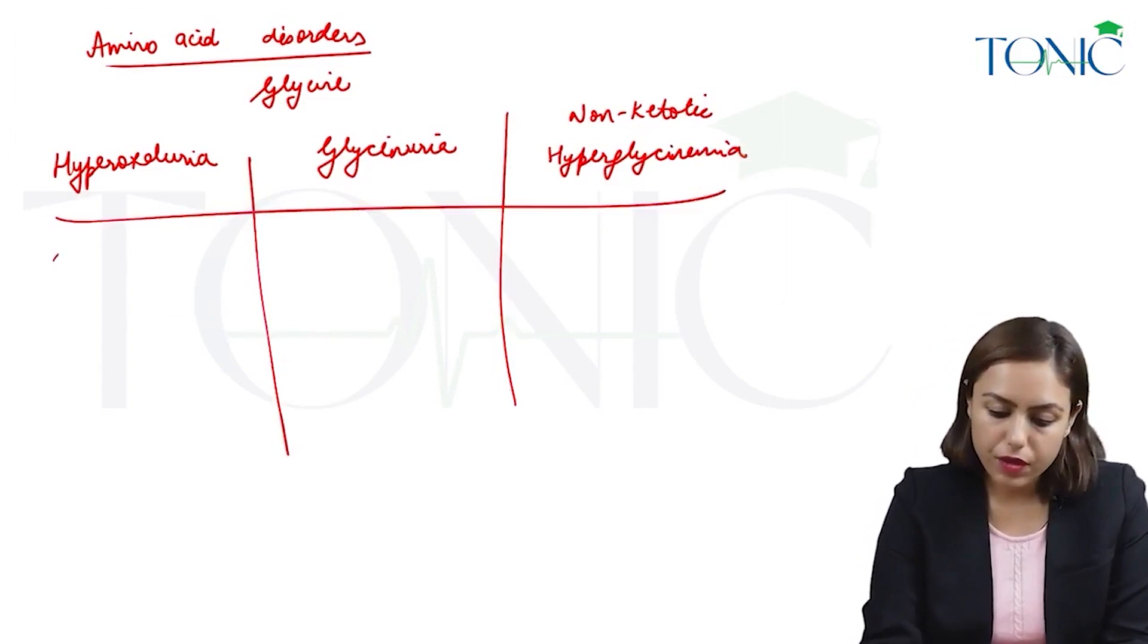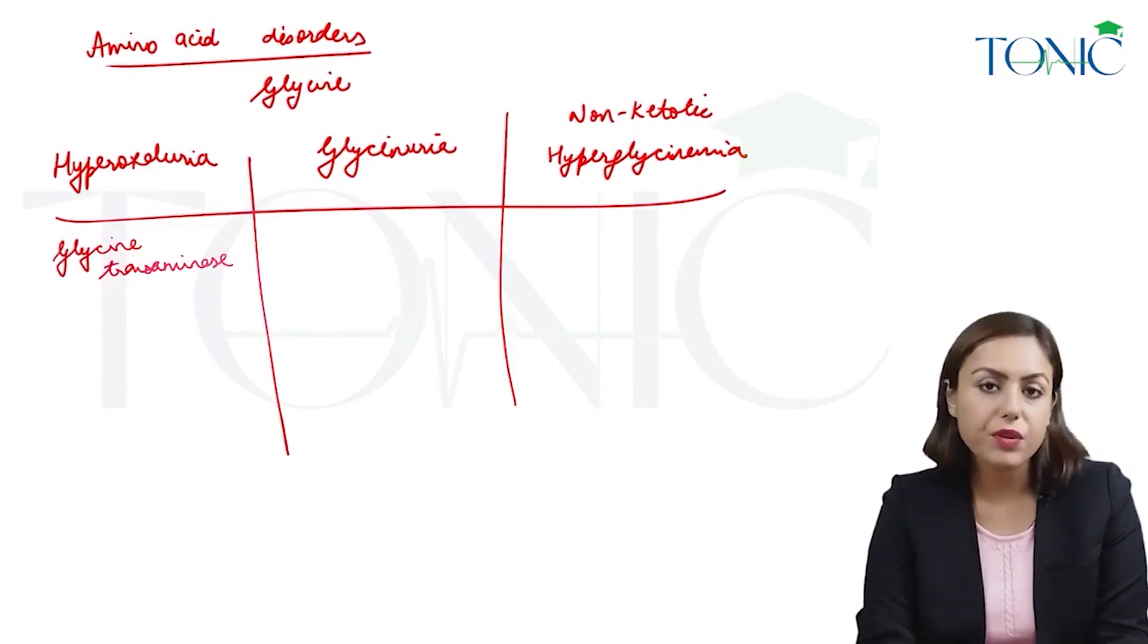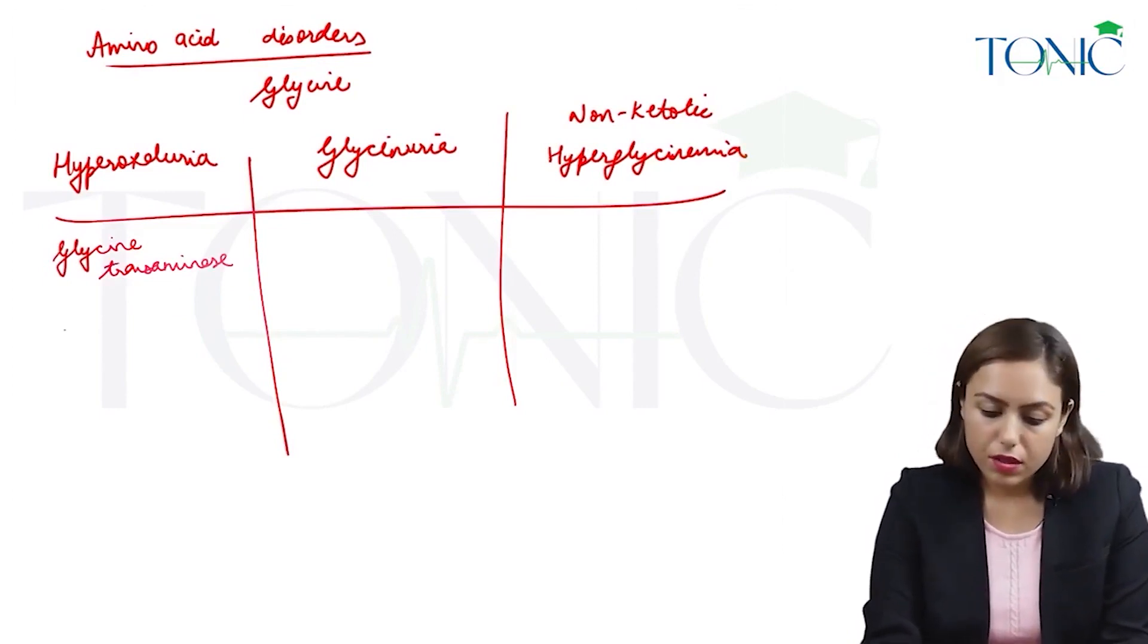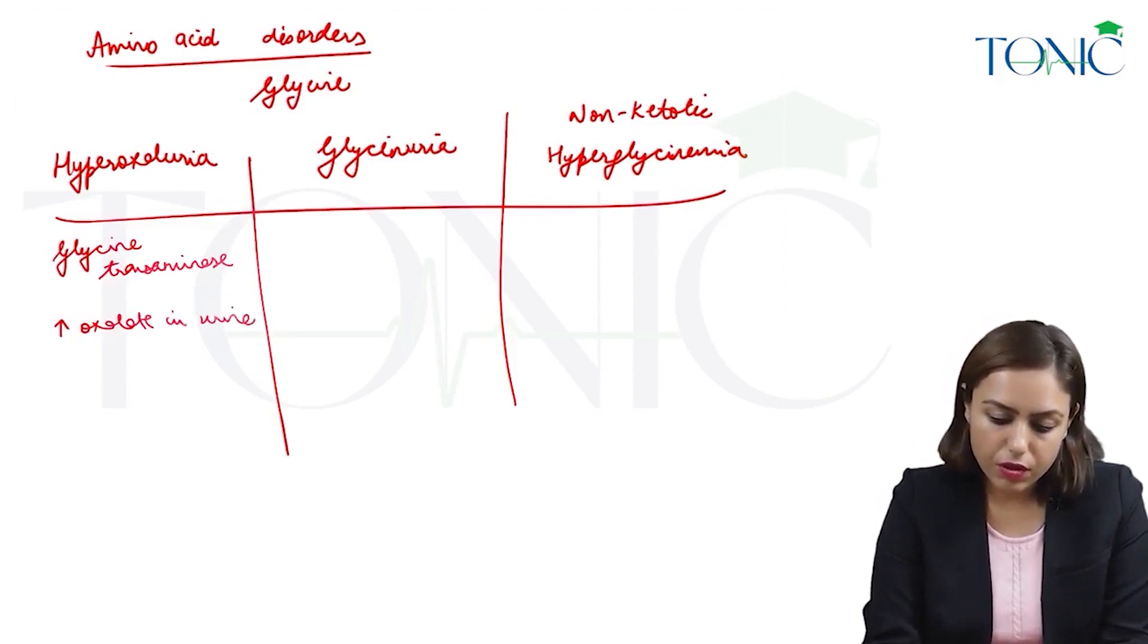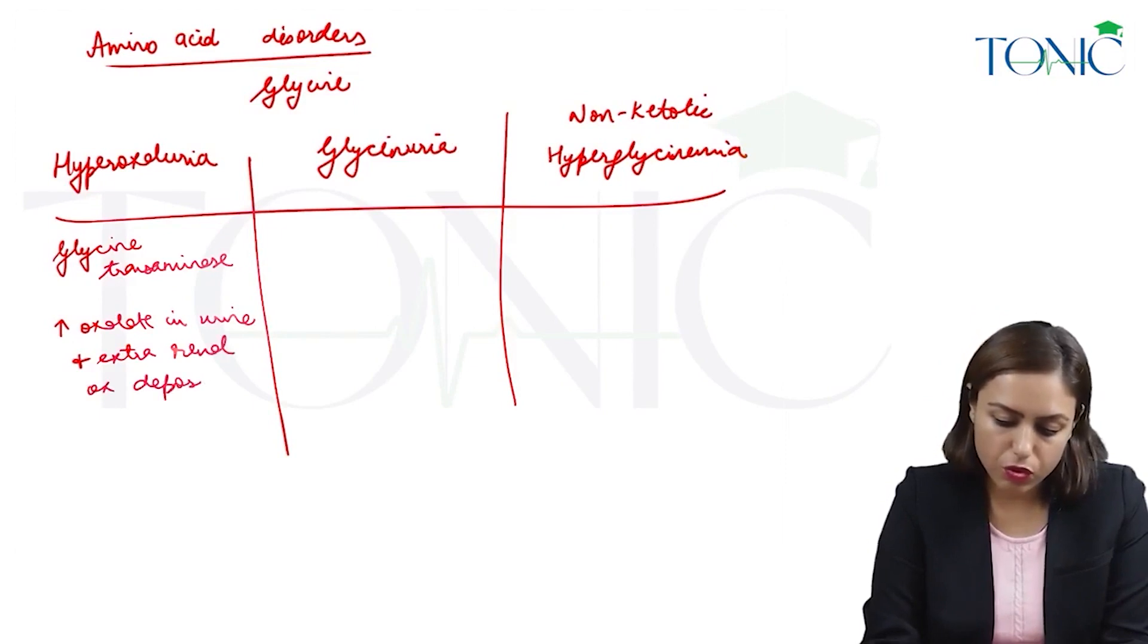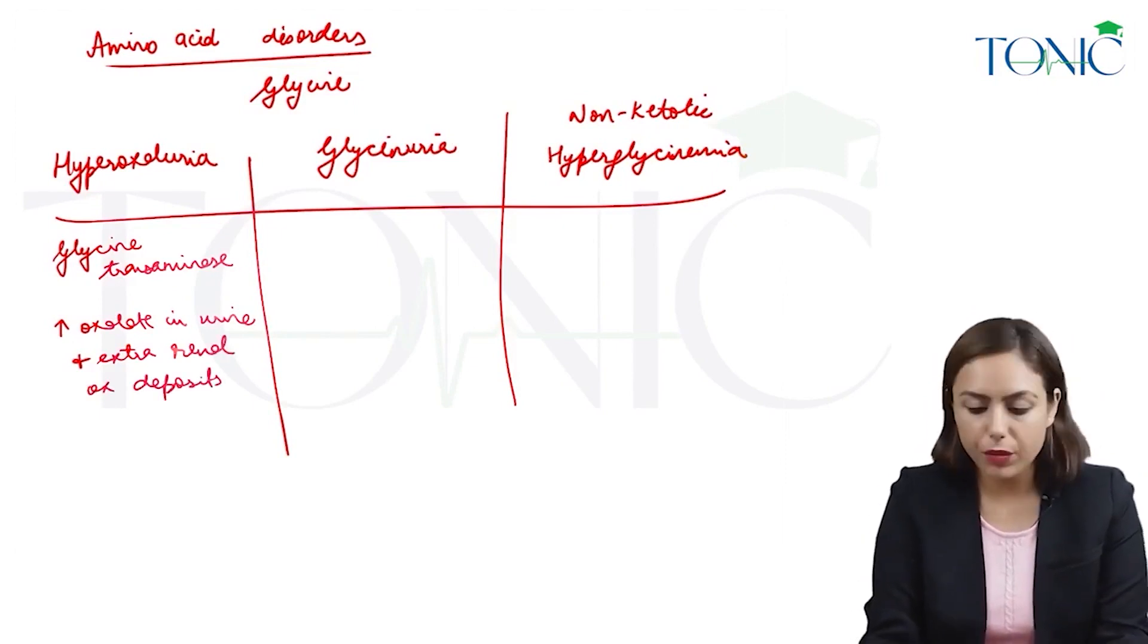In hyperoxaluria the enzyme defective is glycine transaminase. And here there is increased oxalate in urine and extrarenal oxalate deposits also.